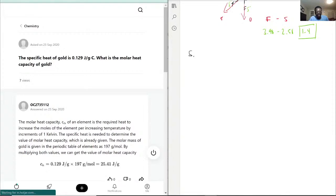The specific heat of gold is 0.129 joules per gram per degree Celsius.